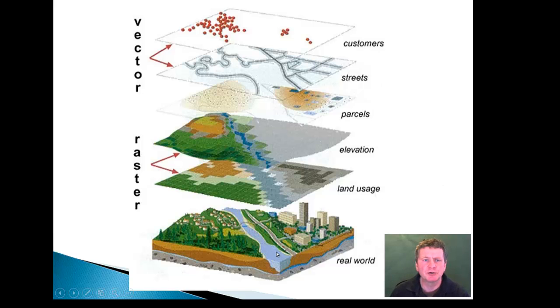So in review our goal with the GIS system is to take the real world and represent it in a format of raster layers and vector layers.